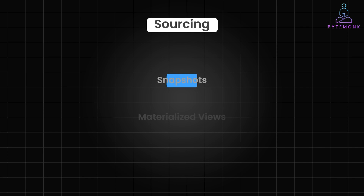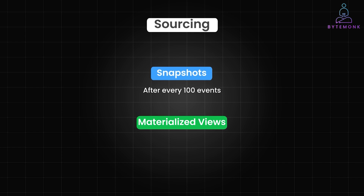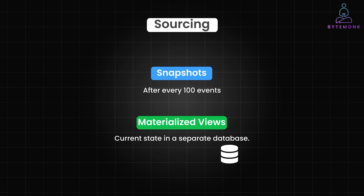In event sourcing, snapshots and materialized views play essential roles in optimizing performance and providing quick access to current states derived from event streams. Instead of replaying every event, you can periodically capture the current state as a snapshot — for example, after every 100 events, you could save a snapshot of that product state. Then when you need the current state, you only replay events from the last snapshot forward, reducing overhead. You might also maintain a materialized view of the current state in a separate database, updated in real time as new events occur, allowing you to query the latest state without replaying events. Snapshots enhance performance on the write side — the rebuilding state side — while materialized views improve performance on the read side. Both techniques are essential for making event-sourced systems scalable and efficient.